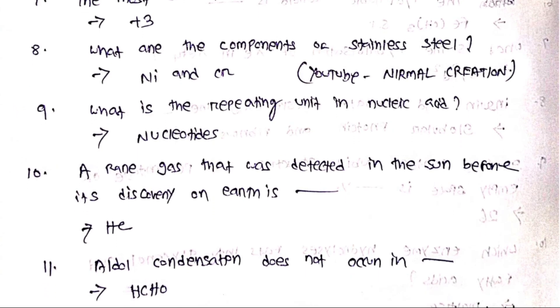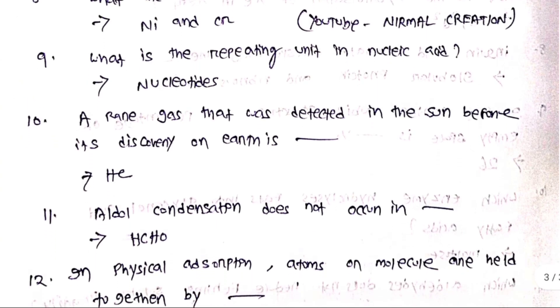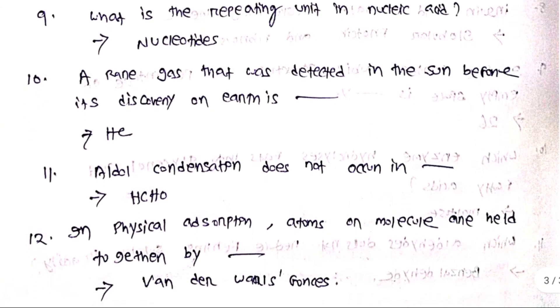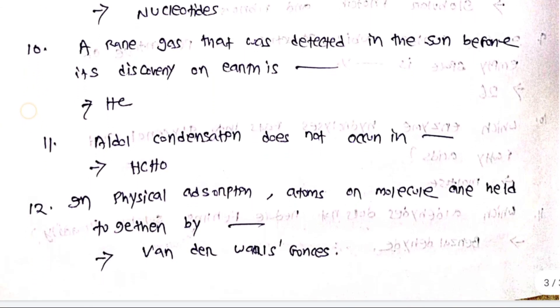What are the components of stainless steel? Ni and Cr. What is the repeating unit in nucleic acid? Nucleotides.